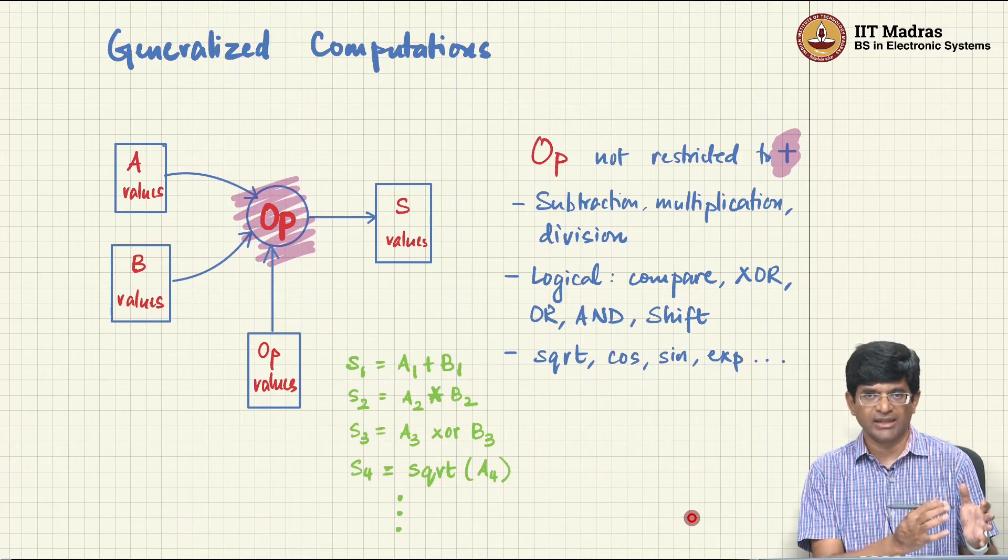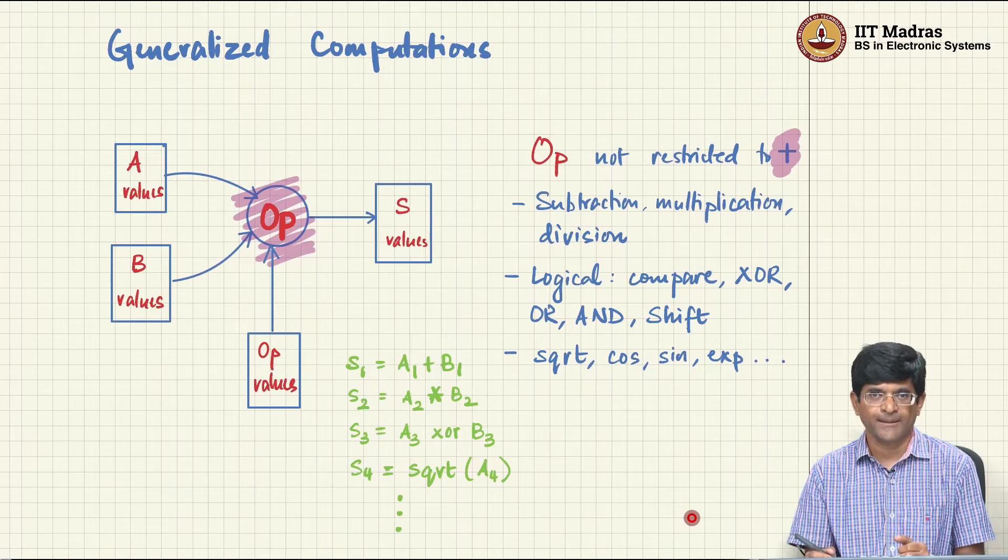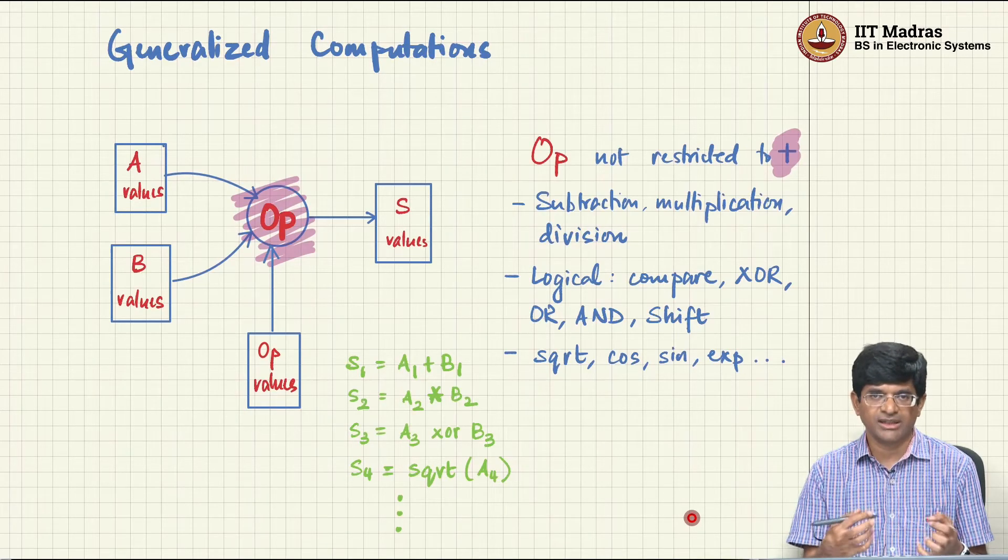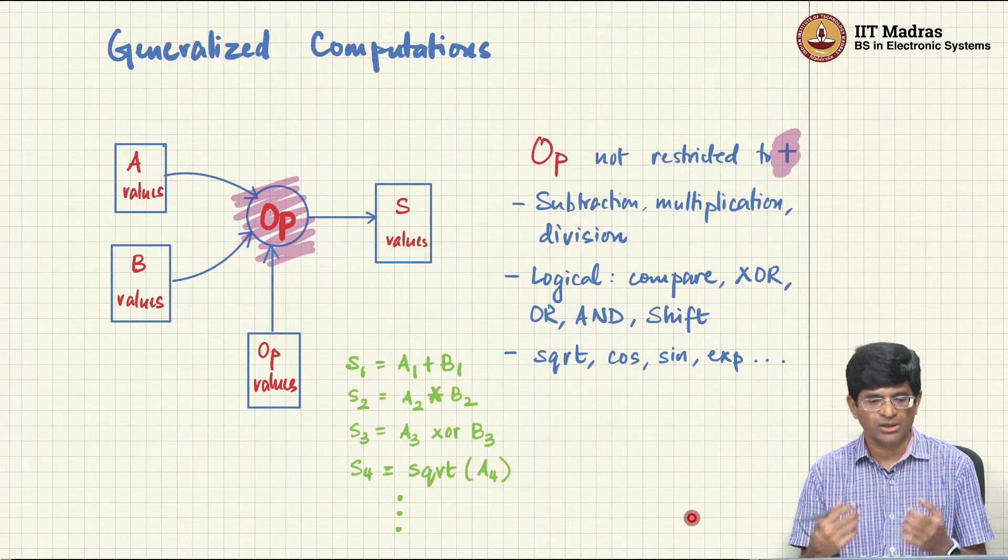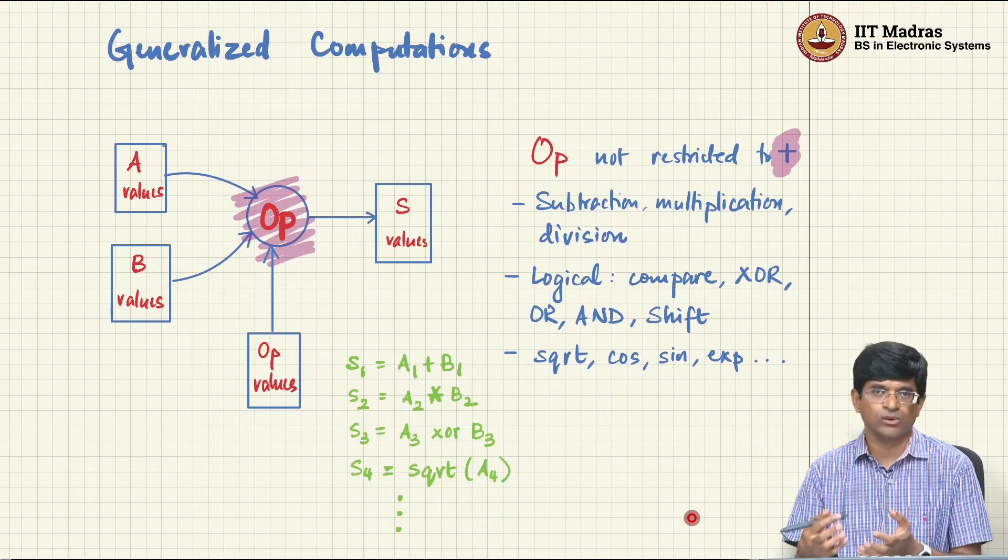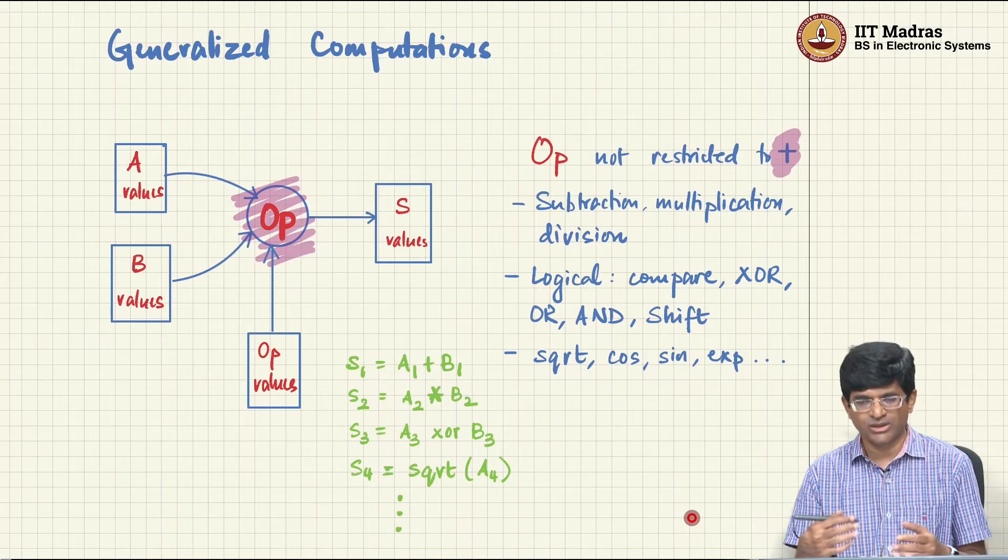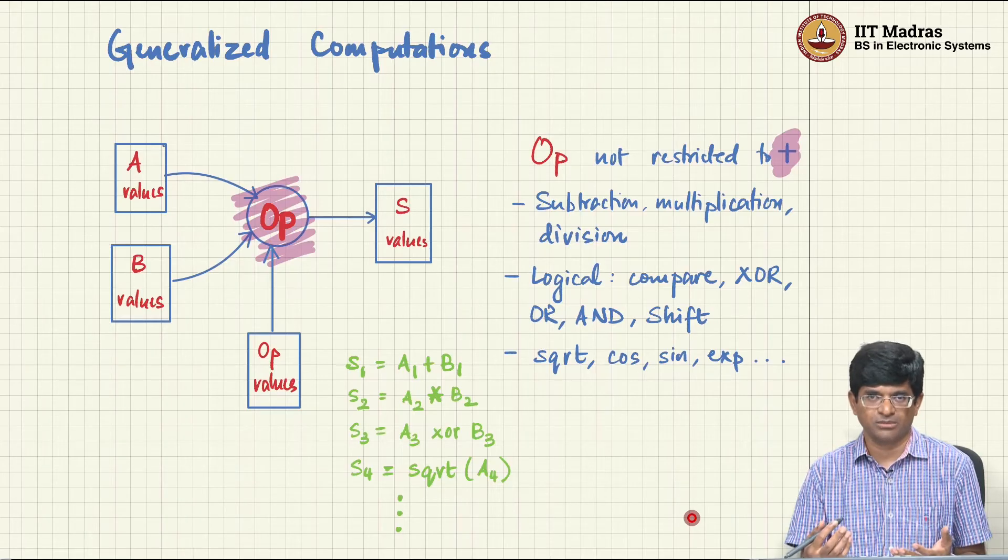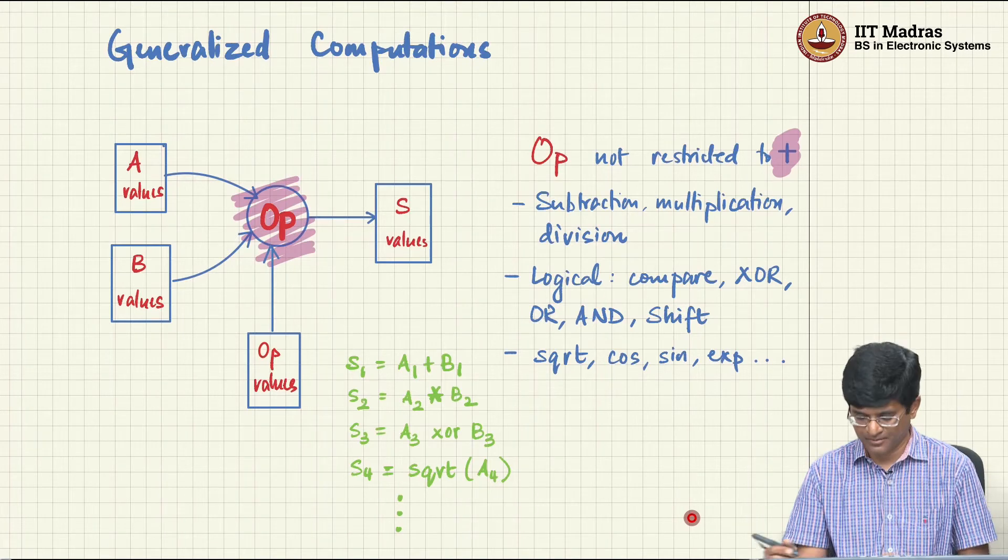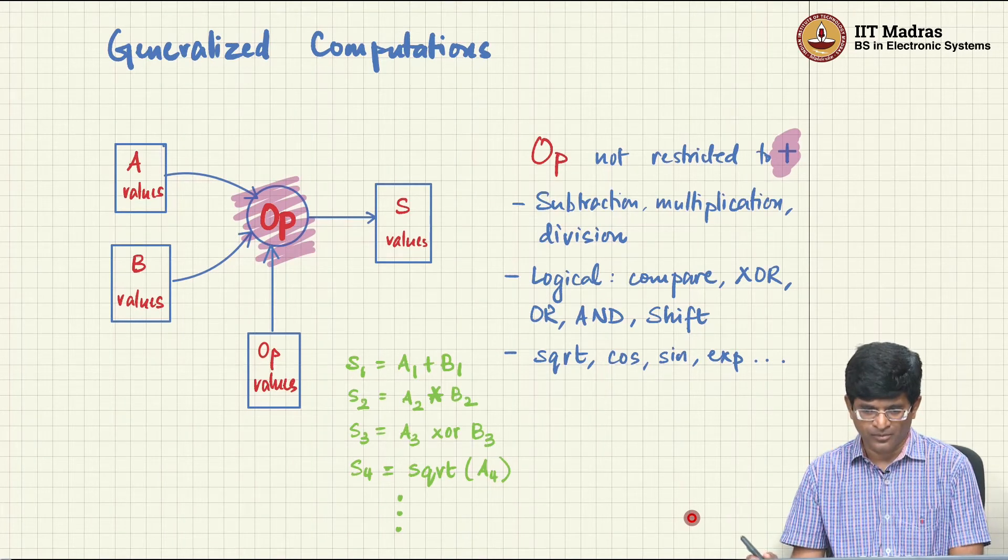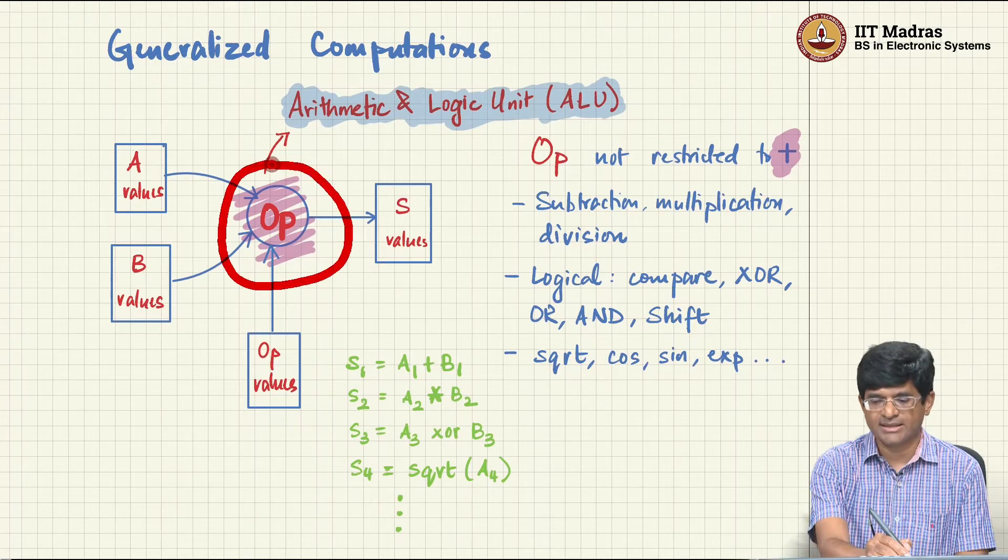I can put a set of numbers in A, another set of numbers in B and a set of operations into this op memory. All I need is some kind of a counter that generates addresses for these values, keeps pulling them out one by one in sequence, puts them through my hardware and generates a sequence of outputs that goes and gets stored in the S memory. So this is a generalization of the idea of computation. It is saying that I am no longer restricted to plus, I can perform other kinds of computations as well.